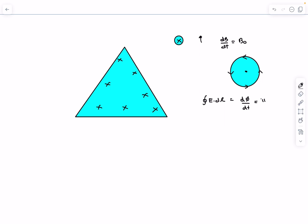So the area is constant, right? So it is going to be πr² times dB/dt, which in this case is B0.